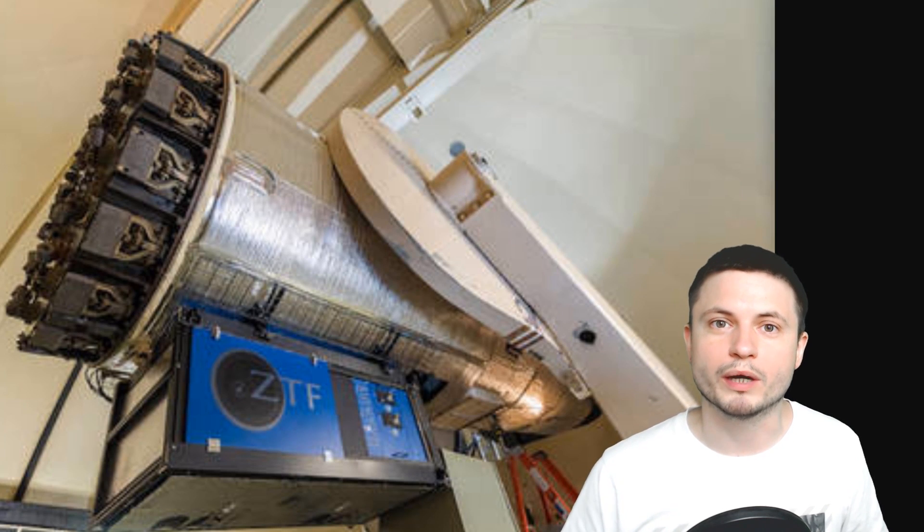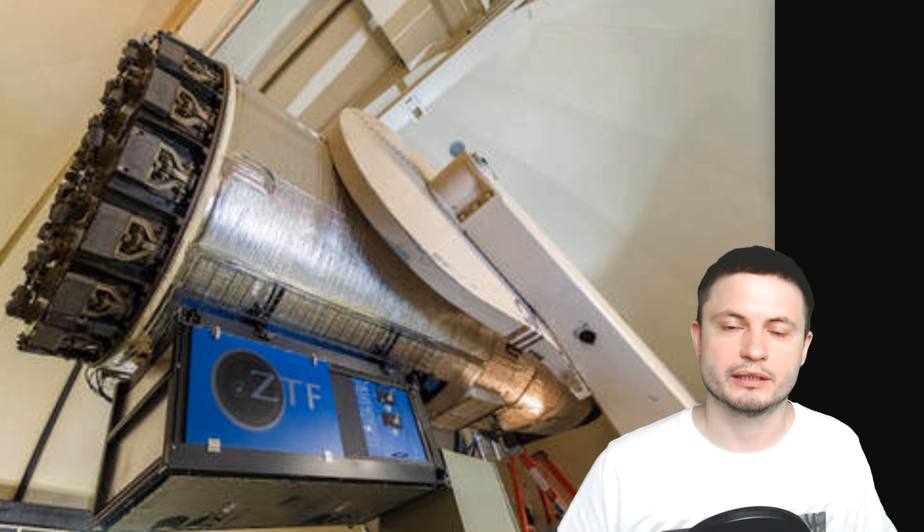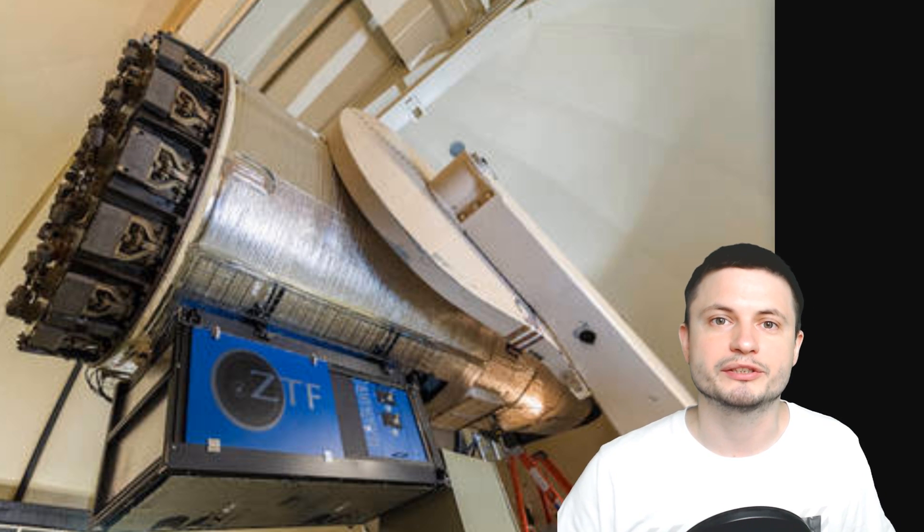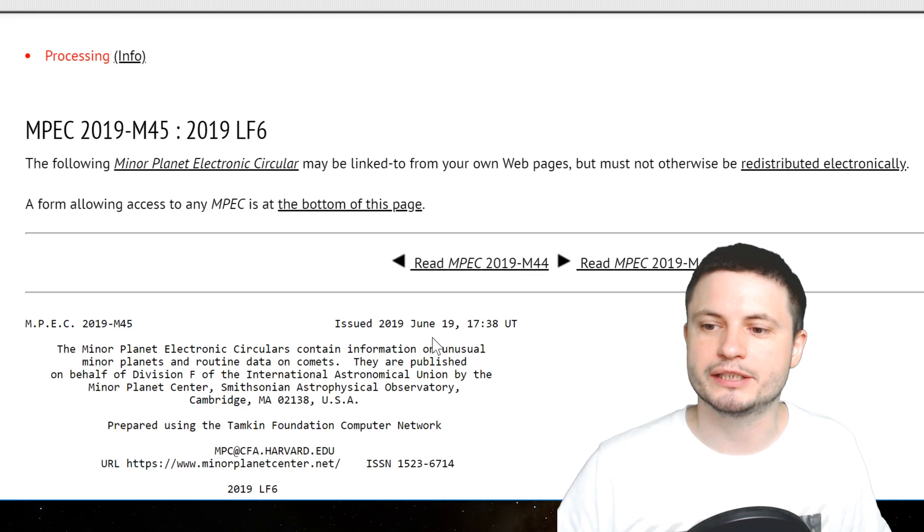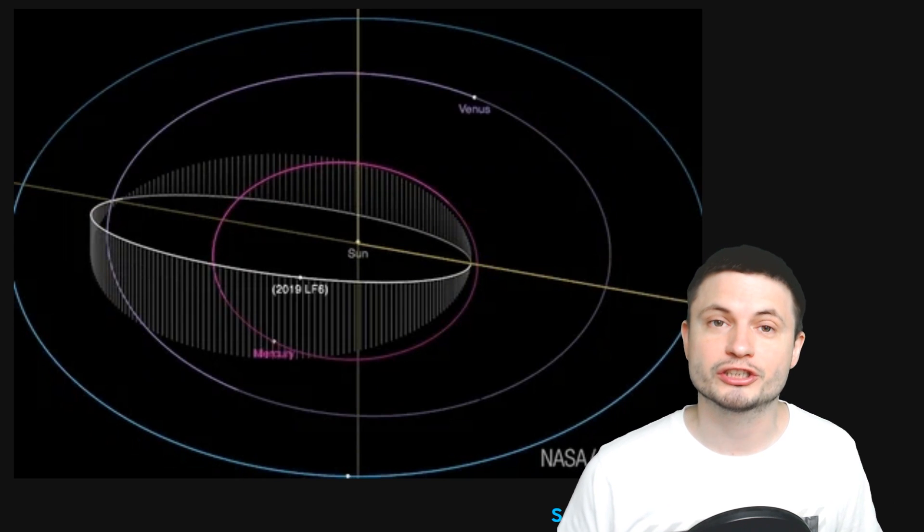There is however at least one telescope that's able to do a relatively good job. This is known as the Zwicky transient facility that's able to detect objects that often appear and disappear relatively quickly. And this is exactly how the object that we just discovered and also the previous asteroid have been discovered by the scientists in June, on June 19th of 2019.